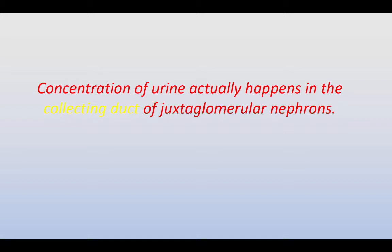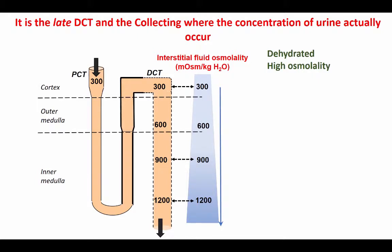It is sometimes surprising to a student to hear that the concentration of urine actually happens in the collecting duct of juxtamedullary nephrons. In a well-hydrated animal, the late collecting duct is impermeable to water. However, if the animal becomes dehydrated and has a high plasma osmolality, it will activate osmoreceptors in the brain and elsewhere, which in turn will cause the release of antidiuretic hormone or ADH, also known as vasopressin.